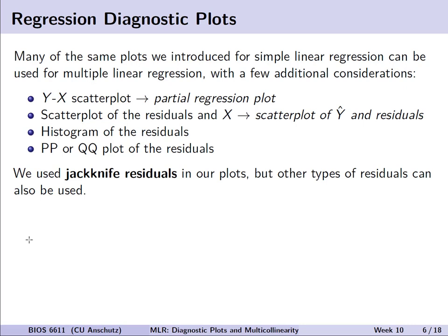In the context of multiple linear regression, we'll see a similar setup, but with two potential modifications. The first is that instead of the y-x scatter plot, we'll use a partial regression plot, which we'll introduce next. Instead of the scatter plot of residuals with a single predictor x, we can also look at the scatter plot of the predicted value y-hat and the residuals.